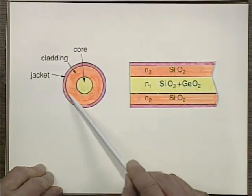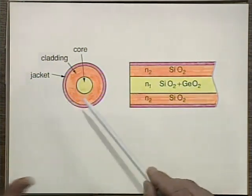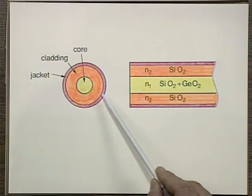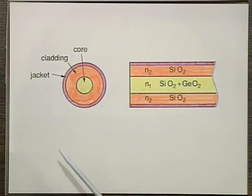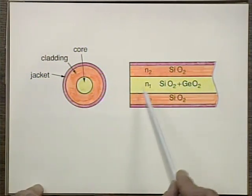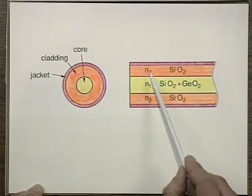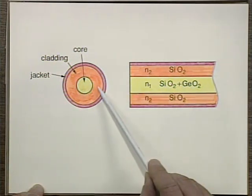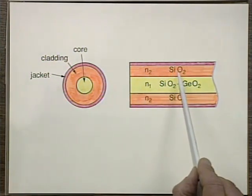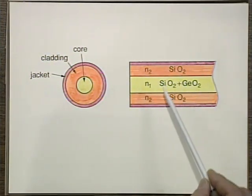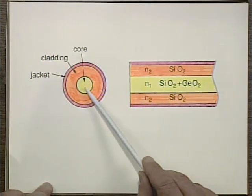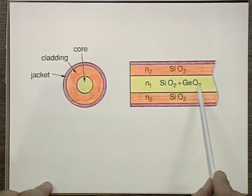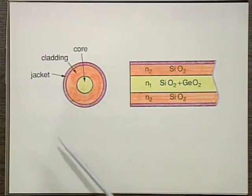The cladding is surrounded by a jacket that protects it. The refractive index N1 of the core is bigger than N2. Sometimes N2 — the cladding material — is just plain silicon dioxide, and the core material is silicon dioxide plus an impurity such as germanium dioxide to raise the index.